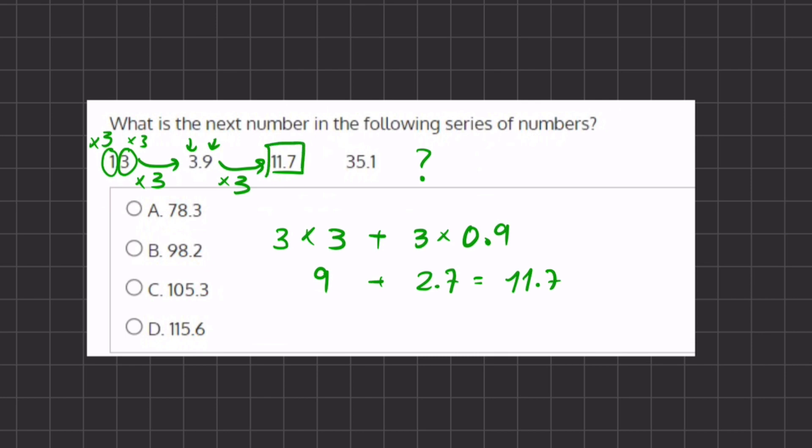And if you add these two numbers, you get 11.7, which is this number over here. Alright, so it seems that our pattern is multiplying by 3. And if we multiply 35.1 times 3, let's break it up just like we did.